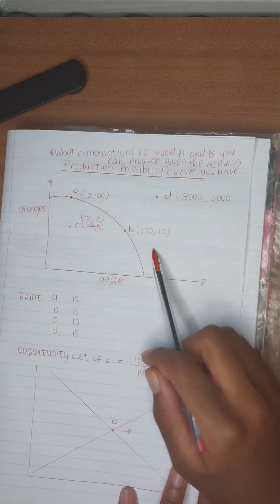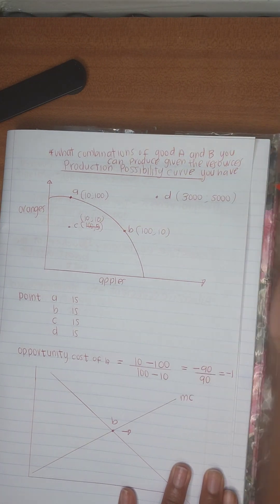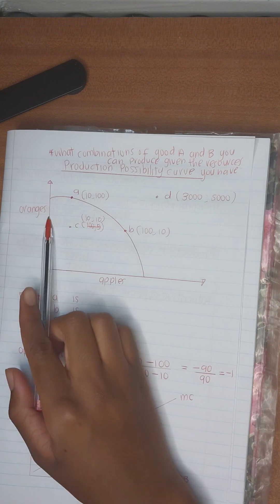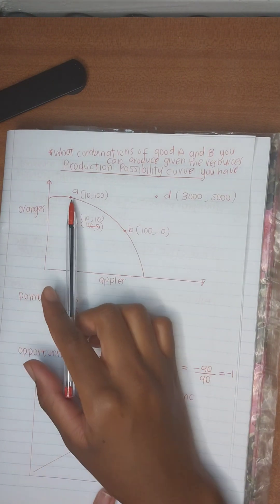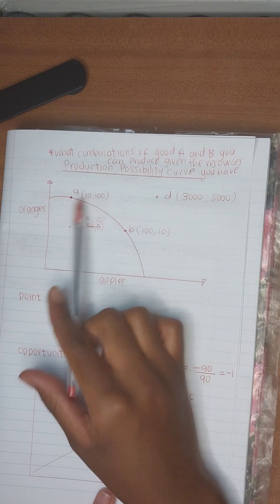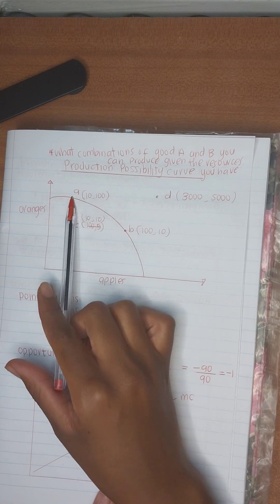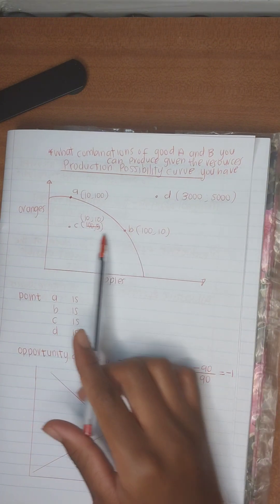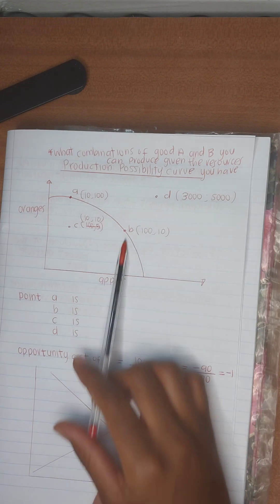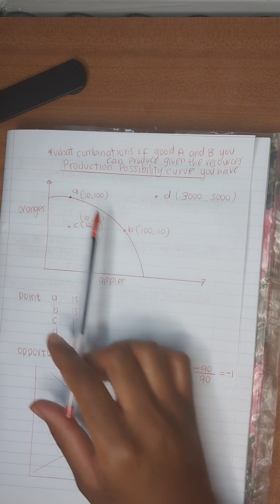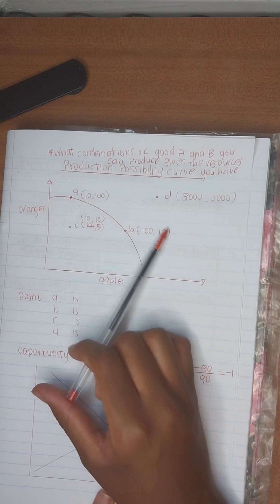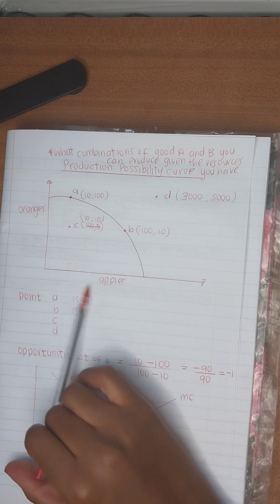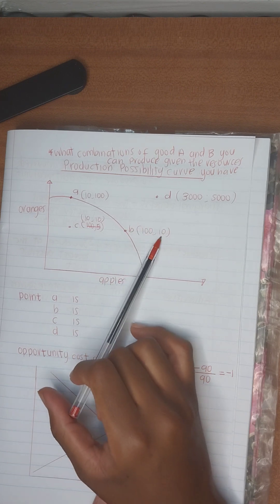I've made up values here. On the Y-axis you are producing oranges, on the X-axis you are producing apples. At point A you can only produce 10 apples and 100 oranges — producing more oranges than apples. However, at point B you are producing more apples: you move from 10 all the way to 100, an increase of 90, but in order to do that you have to reduce your Y quantities from 100 all the way down to 10. So at point B you produce 100 apples and 10 oranges.